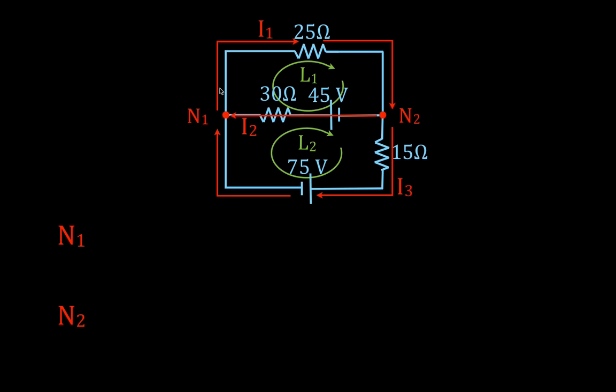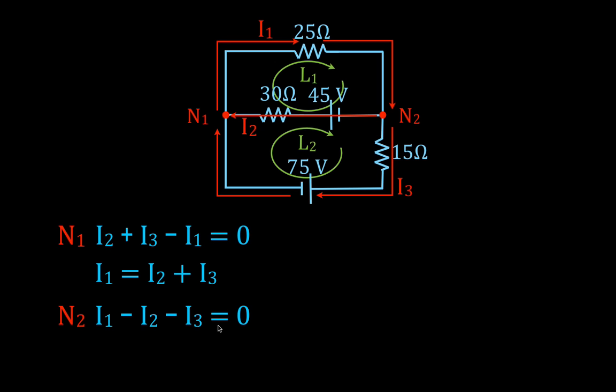At node N1 we have I2 and I3 entering and I1 leaving, so we write positive I2 plus I3 minus I1 equals zero, which rearranges to I1 equals I2 plus I3. At N2 we have I1 entering and I2 and I3 leaving, which rearranges to the same equation: I1 equals I2 plus I3.